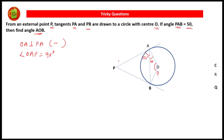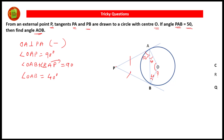Angle OAP equals angle OAB plus angle BAP, which equals 90 degrees. Since angle BAP is 50 degrees, angle OAB equals 90 − 50 = 40 degrees. Similarly, PA and PB are equal tangents from the exterior point, so triangle PAB is isosceles and the angles opposite equal sides are equal, giving angle PAB equal to angle PBA equal to 50 degrees, so angle OBP is also 90 degrees and angle OBA equals 40 degrees.